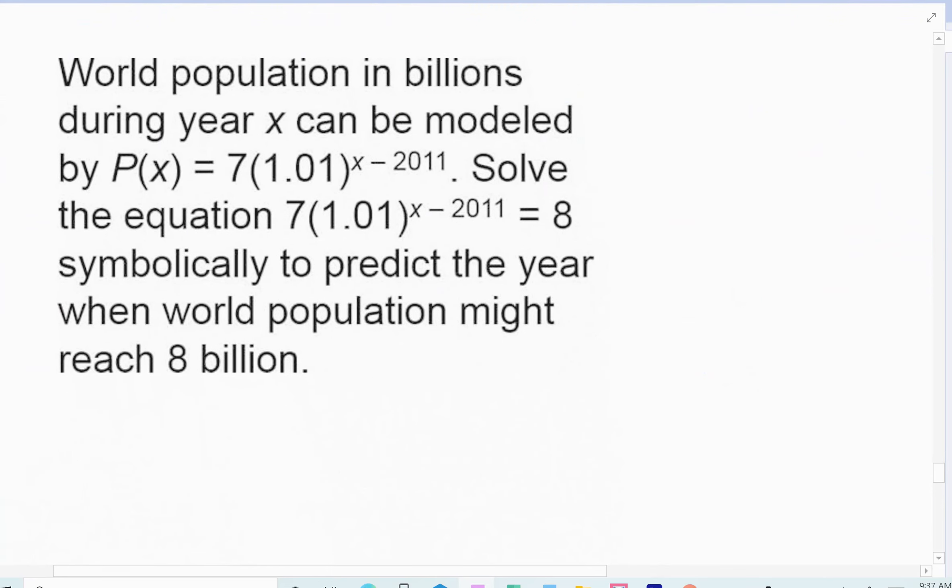All right, next example. The world population in billions during the year x can be modeled by the equation 7 times 1.01 raised to the x minus 2011. Solve the equation symbolically to predict when we reach 8 billion. So that's what the equation is standing for. I want to know what year. So x represents the year.